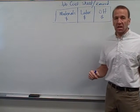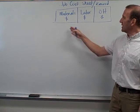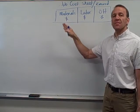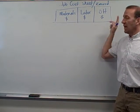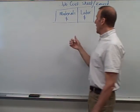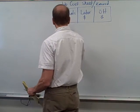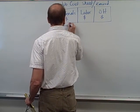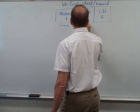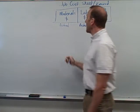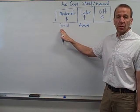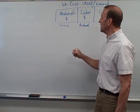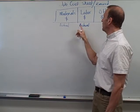In our last video we talked about the job cost sheet. The job cost sheet in job order costing keeps track of our materials, our labor, and our overhead costs. Materials and labor — these are actual costs. We track the actual labor costs, and materials come out of raw materials going into our job cost sheet where we track our work in process.